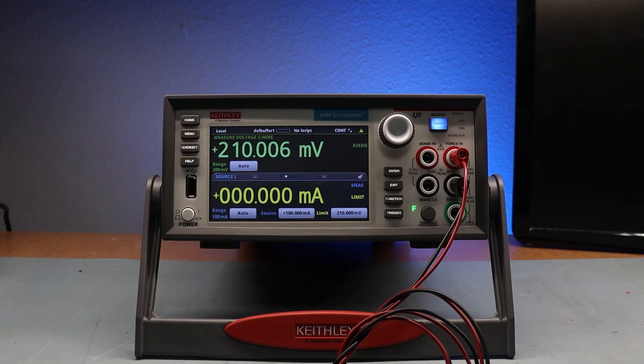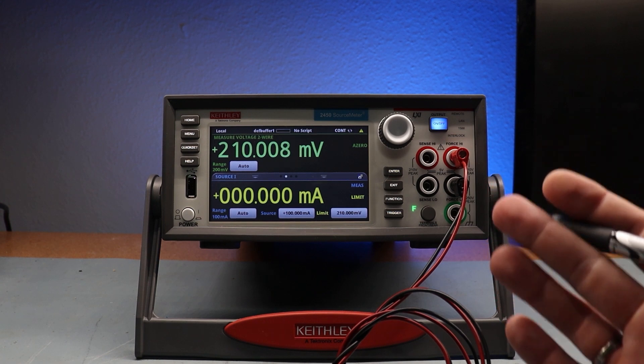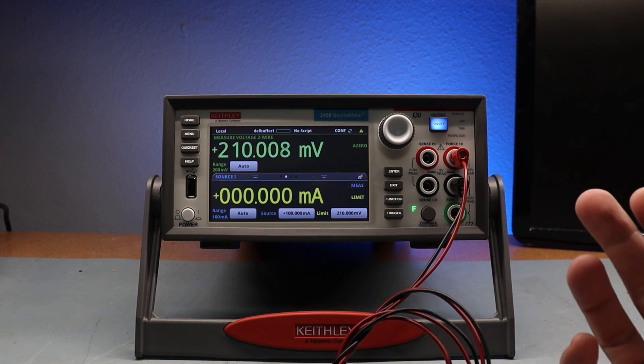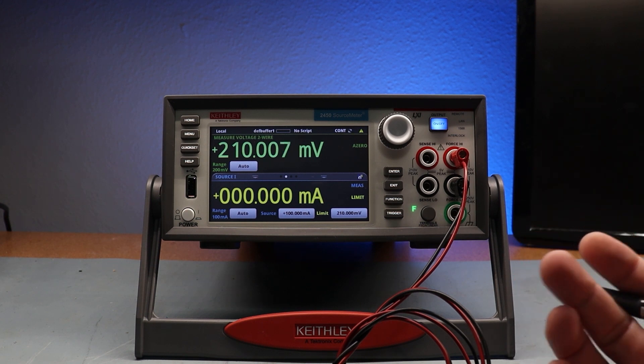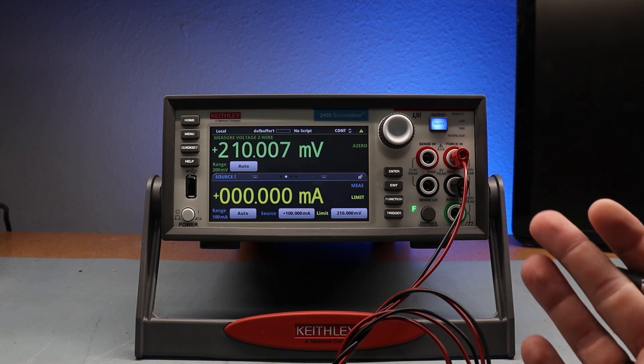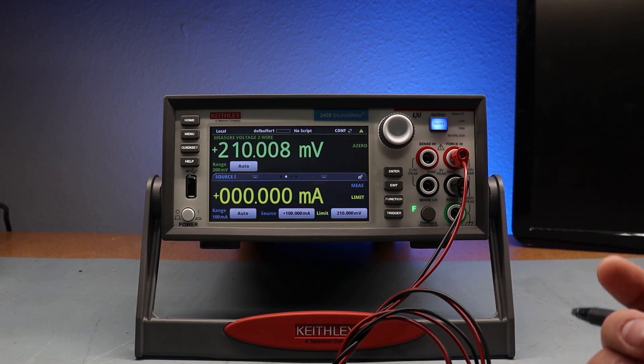For this demonstration I'm using a Keithley source measure unit or SMU. This one is the Keithley 2450 source meter. It has the ability to source current and voltage as well as read both. Now I know what you're thinking, something like this is outside of my budget. Spoiler alert, in a couple of weeks we're going to make our own standalone current source for the bench so that you can make pretty accurate four wire measurements with a simple DMM. So make sure to come back.